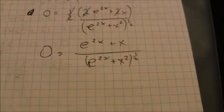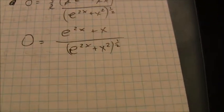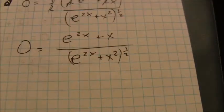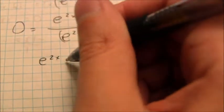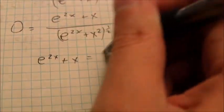Well that's going to be equal to 0 when the numerator is equal to 0. So I need to find out what's going to make that numerator equal to 0. That's e to the 2x plus x equals 0.